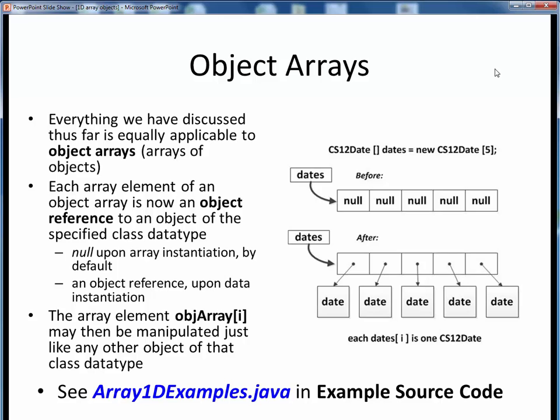We've already spoken of arrays as being an indexed collection of like-typed items. Everything we've discussed so far about arrays is equally applicable to arrays of objects, or object arrays.